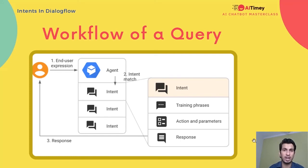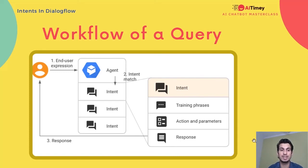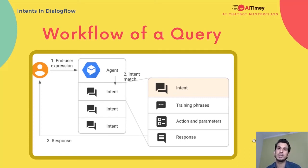So let's understand the workflow of Dialogflow — how does a query flow from your user to Dialogflow and then back to your user as an answer? The user types something, called end user expression, which comes to your Dialogflow agent. The agent finds out which is the best intent that matches the user query, and once it matches the right intent, it answers according to that intent and shows the response to the user. You just need to find the right intent and then the answer will be given.